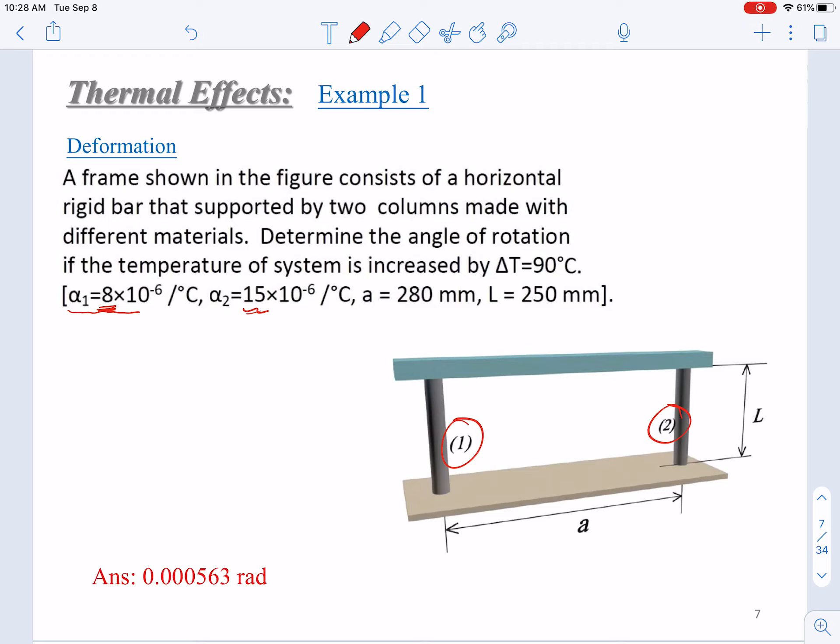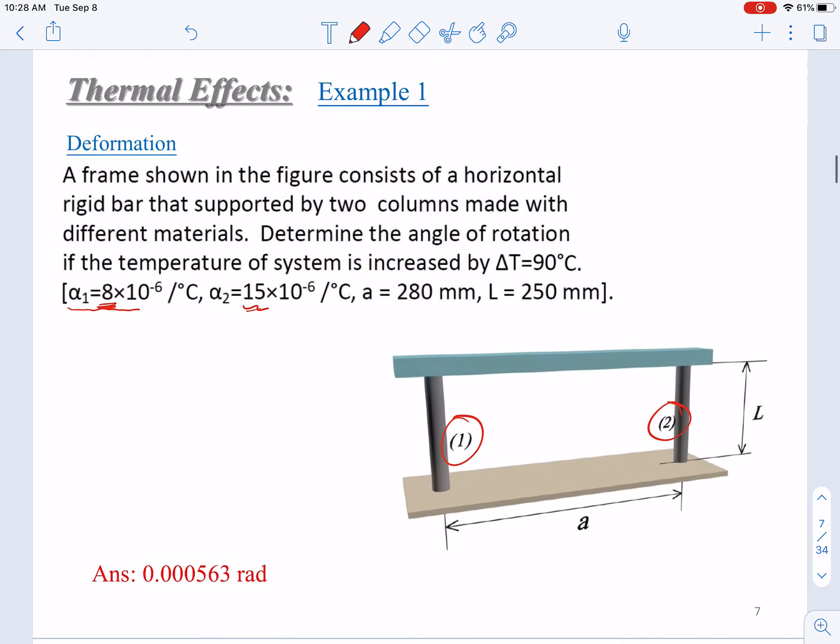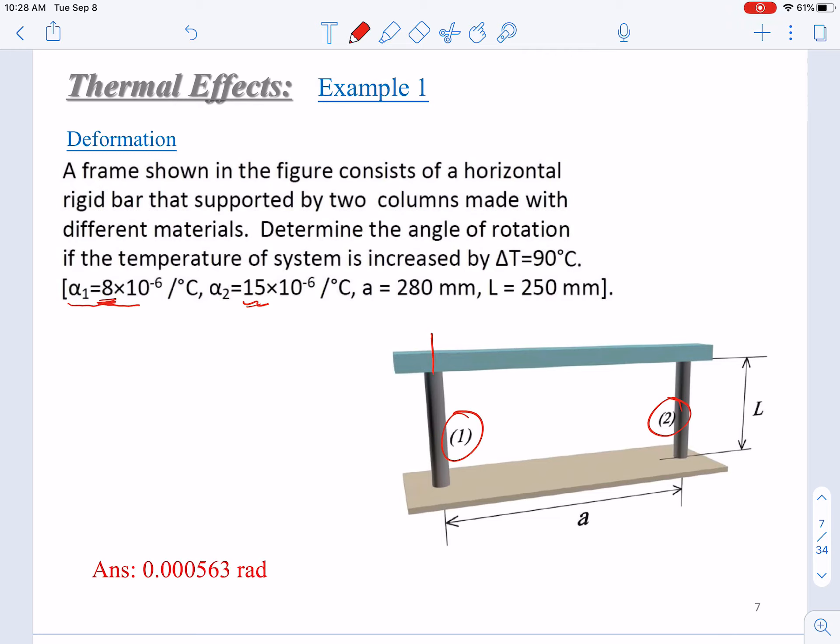Column 1 will be expanded this much. Then column 2 will be expanded more because α₂ is larger than α₁, so it will be elongated to here.